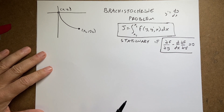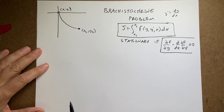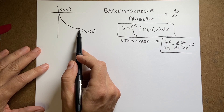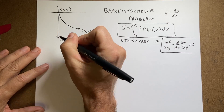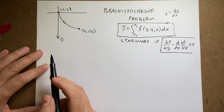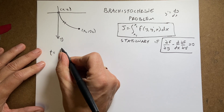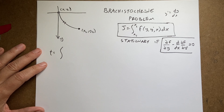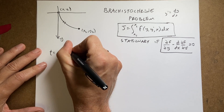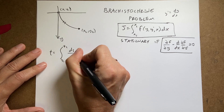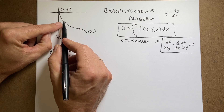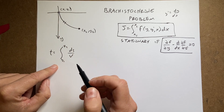Let's start with a couple of things. Number one, I'm going to start at the origin and end up down at some point, with the y direction going downward. I want to find the time it takes to go down this path. The time equals the integral from y1 to y2 of ds over v — ds over v is the time to move along a little path element, and I'm adding up all those times.